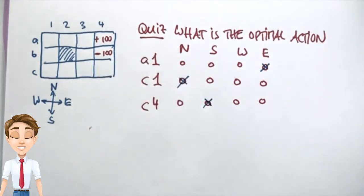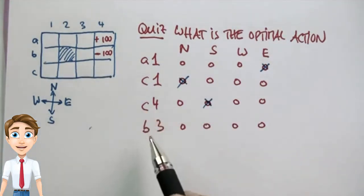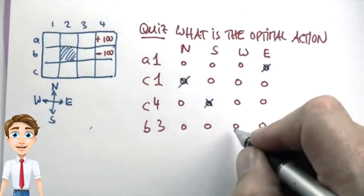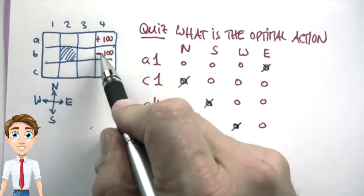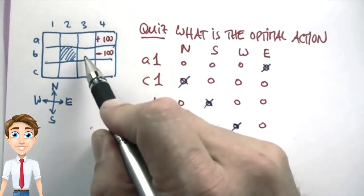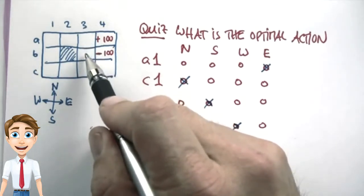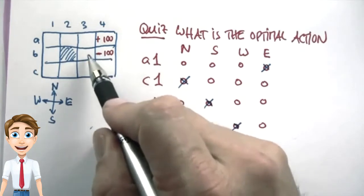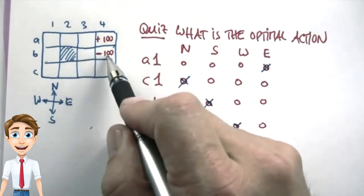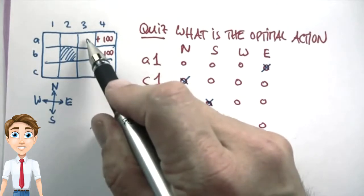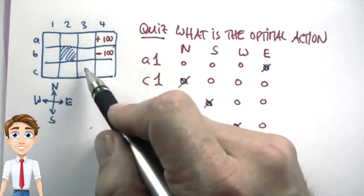That argument is tricky. So what should we do in state B3 as the optimal action? The answer is west. If we're over here and go east, we likely end up at minus 100. If we go north, which seems intuitive, there's a 10% chance we fall into the minus 100. However, if we go west, there's absolutely no chance we fall into the minus 100. We might find ourselves in neighboring states, but from those states there are safe policies that can safely avoid the minus 100.